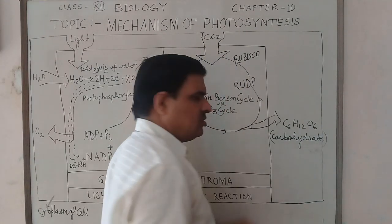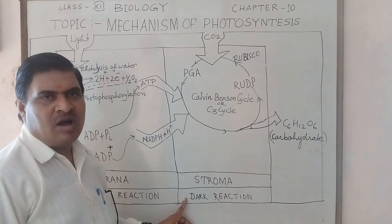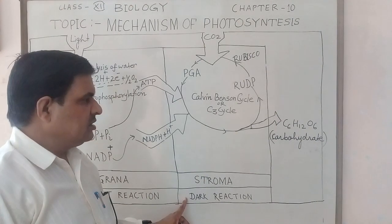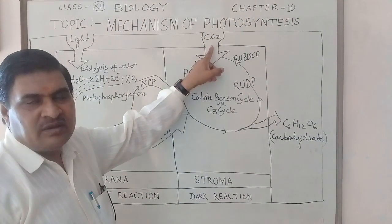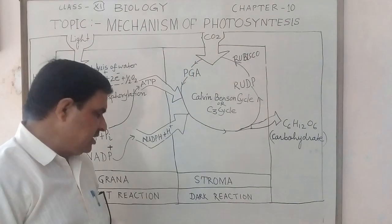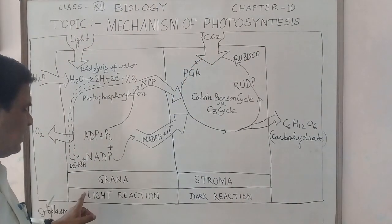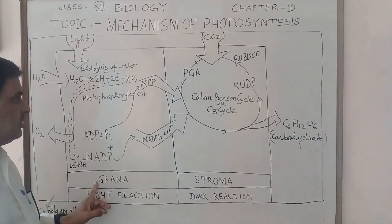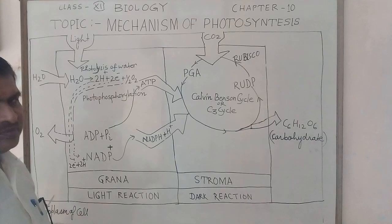In the dark reaction of photosynthesis, reduction of carbon dioxide takes place. In the light reaction, which occurs in the granum, several steps occur.